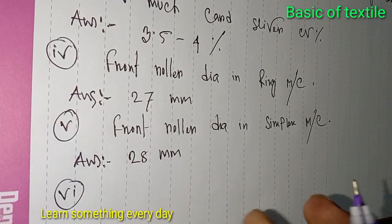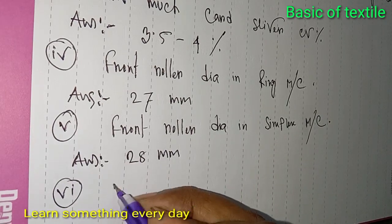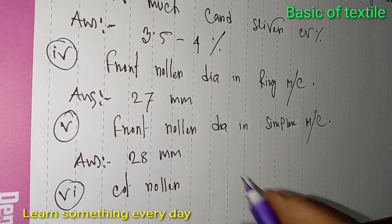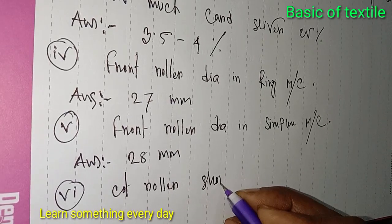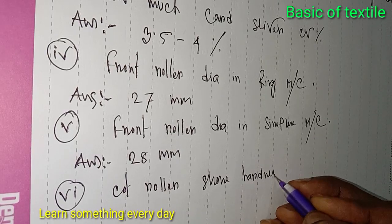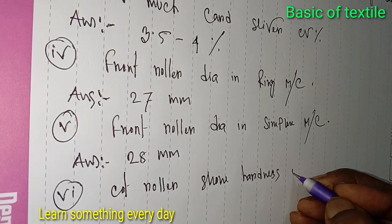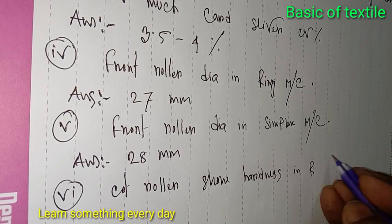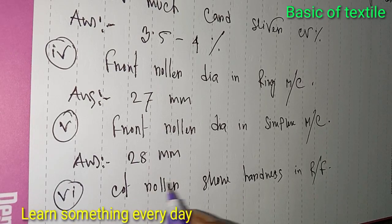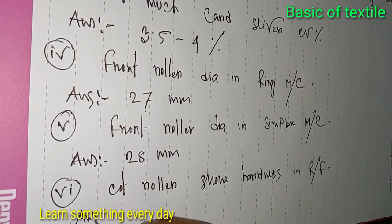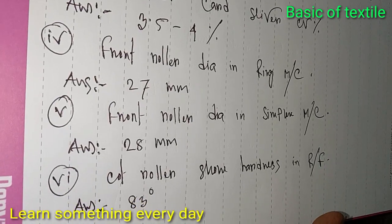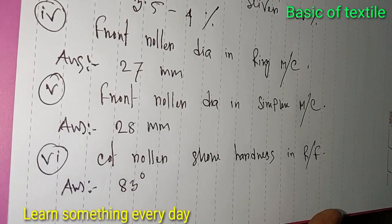Number six: Shore hardness in ring frame. Answer: 83 degree shore hardness.